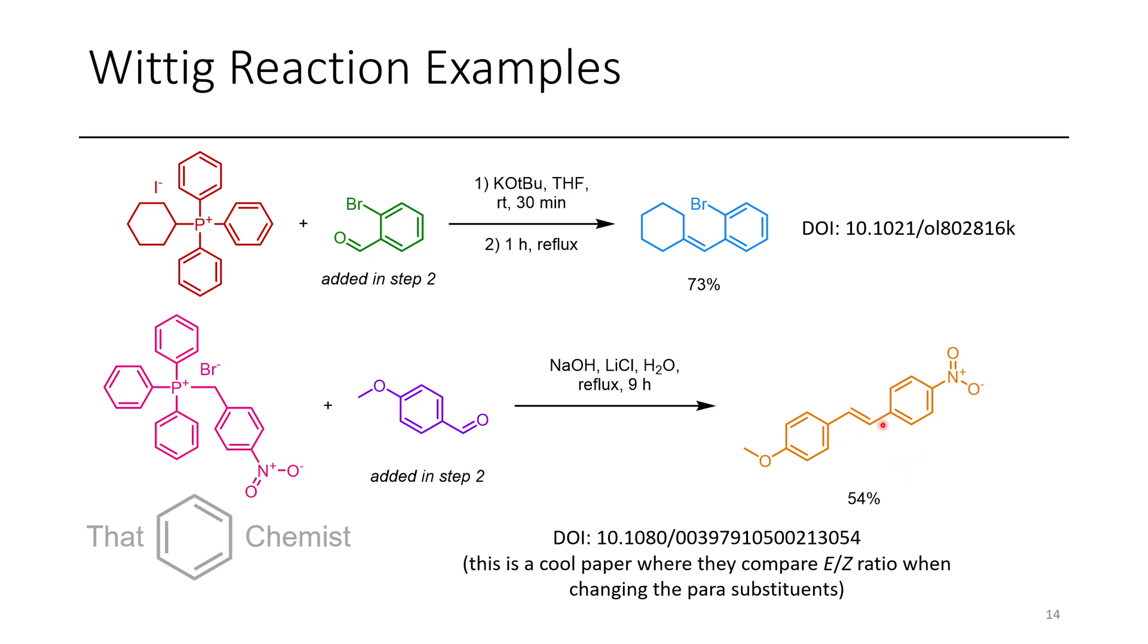And the cool thing that this paper does is they look at where they change the substituents on each of these, both the Wittig and the aldehyde, and then they look at the E to Z ratio of the products. So in these cases, in most of the examples that I'm talking about, exclusively one alkene was formed. Whereas in many other cases, you're going to get mixtures, as I was saying earlier, unless you pick really specific conditions.